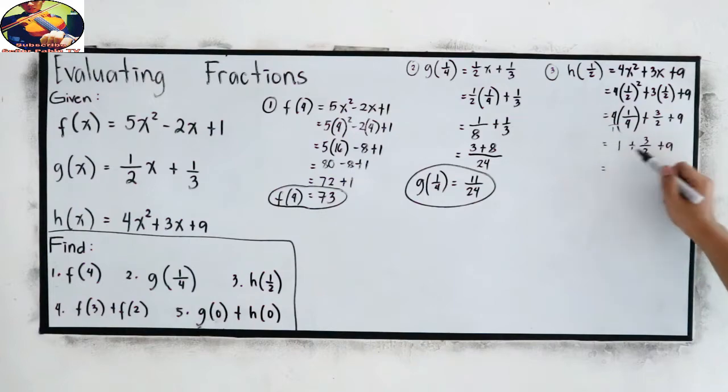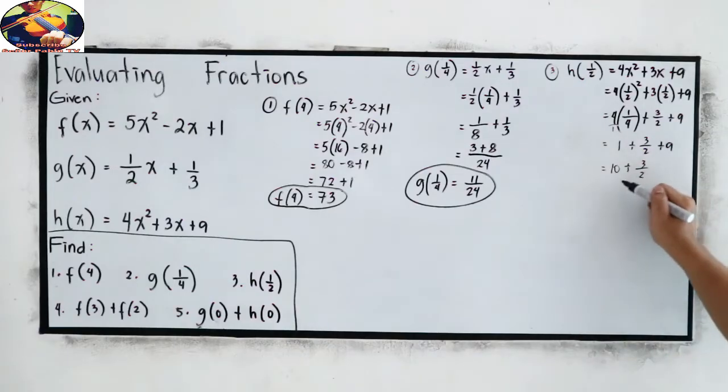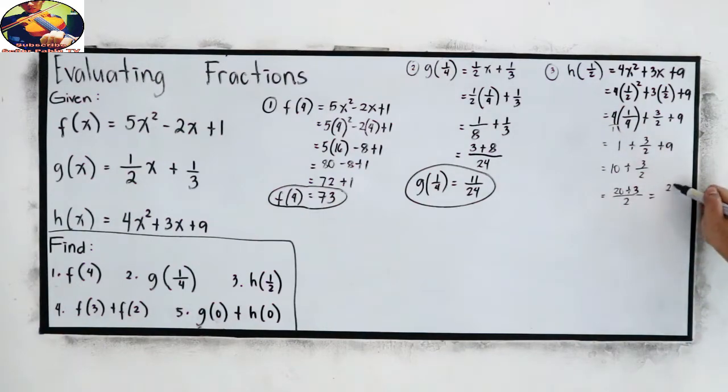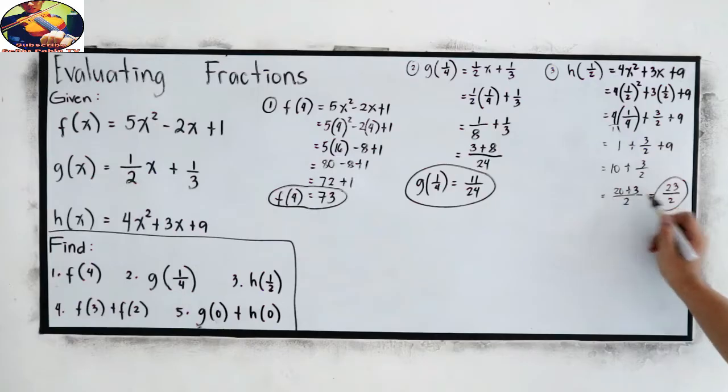Okay. Now, simplify. 1 plus 9, this is 10, plus 3 over 2. So, you can write your final answer in mixed number form, 10 and 3 over 2, or let's find the LCD. LCD is 2. 2 times 2 divided by 1. The whole number has a denominator of 1. That is 2 times 10, which is 20 plus 3.